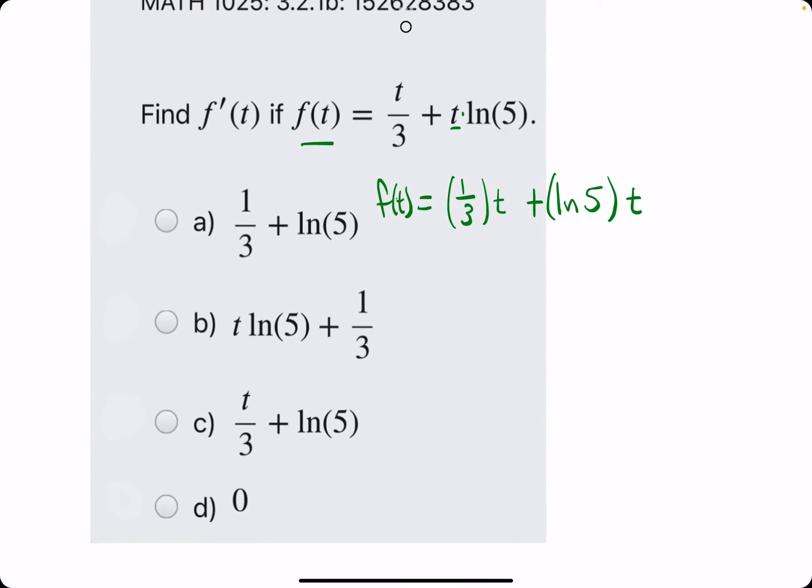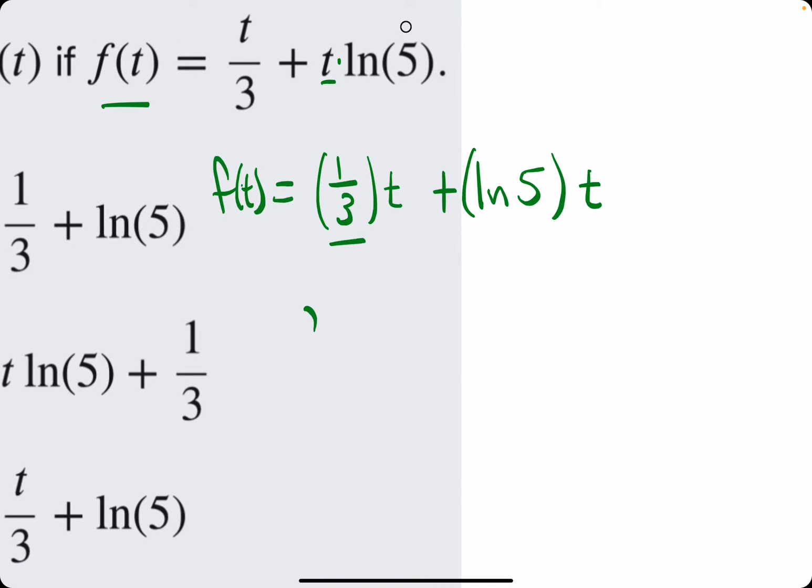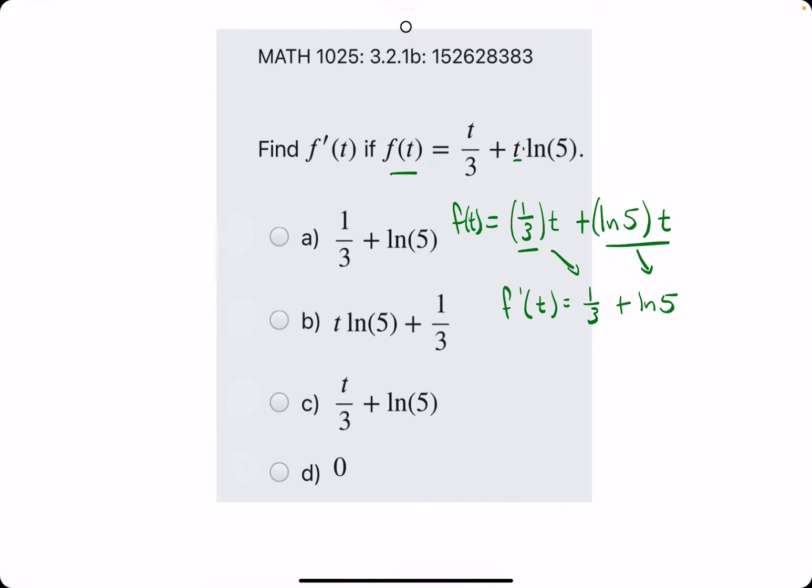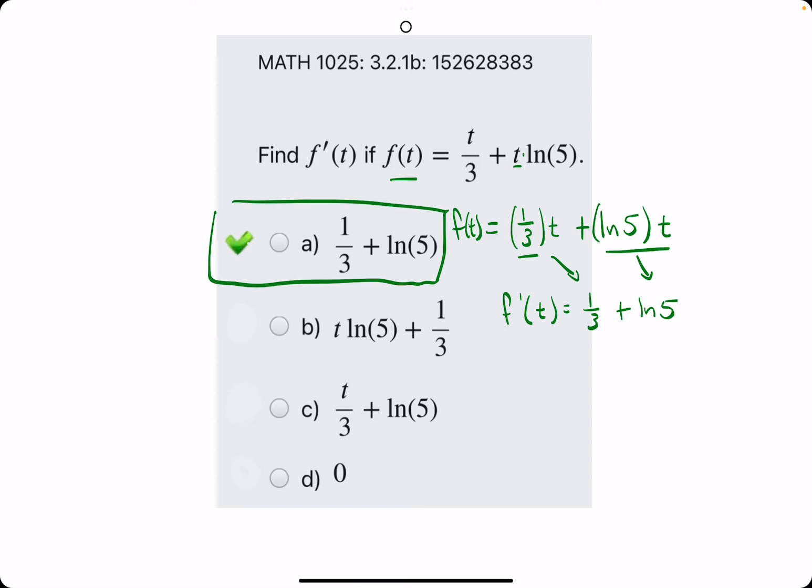So here what we have are a constant times t two different times. So the derivative of a constant times t is just the constant. So one-third t goes to one-third and ln of 5 times t goes to just ln of 5. So we're looking for the answer with one-third plus ln of 5. We break out the eraser to see that a is our answer.